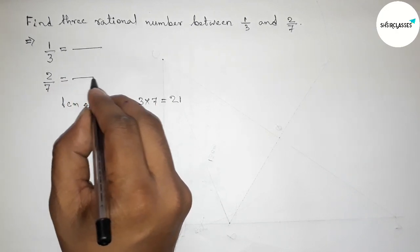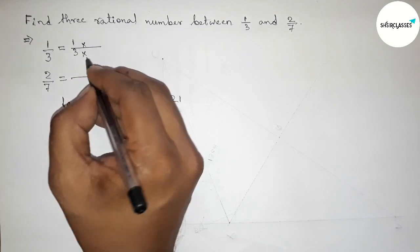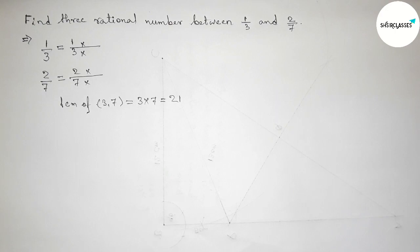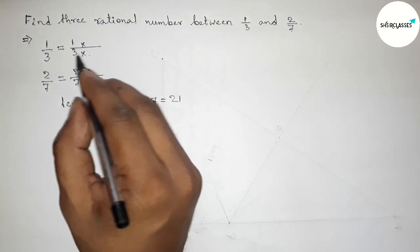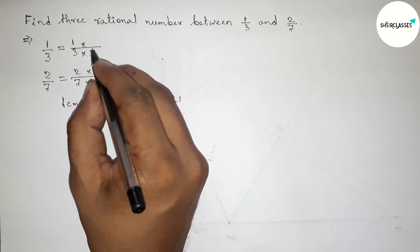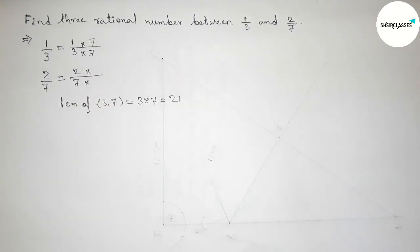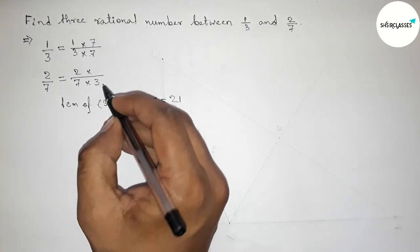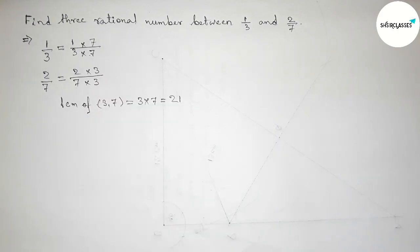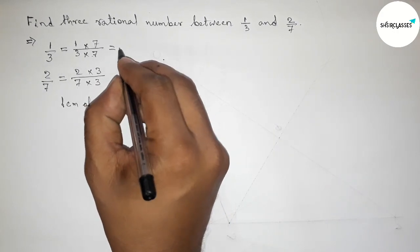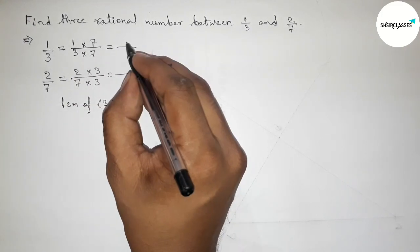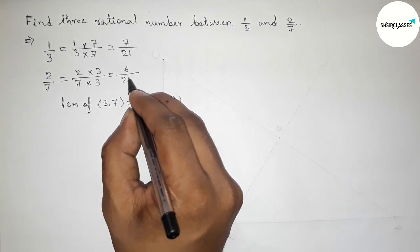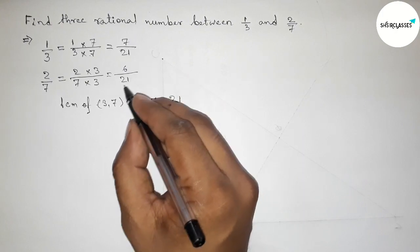Now doing the calculation: for 1 by 3, to get denominator 21, multiply top and bottom by 7, giving 7 by 21. For 2 by 7, to get denominator 21, multiply top and bottom by 3, giving 6 by 21. Now both denominators are 21.